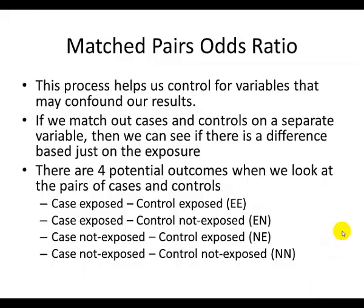In the last video, you were able to see how we calculate an odds ratio based on a case-control study. However, sometimes there are variables that are associated with the variable we're studying that confound our results. For instance, if we're studying cancer and looking at benzene or radon in your home, we also understand that smoking causes a lot of cancer. Many times that smoking variable will confound the results of the radon study, so we have to find a different method that allows us to control for some of those extraneous variables.